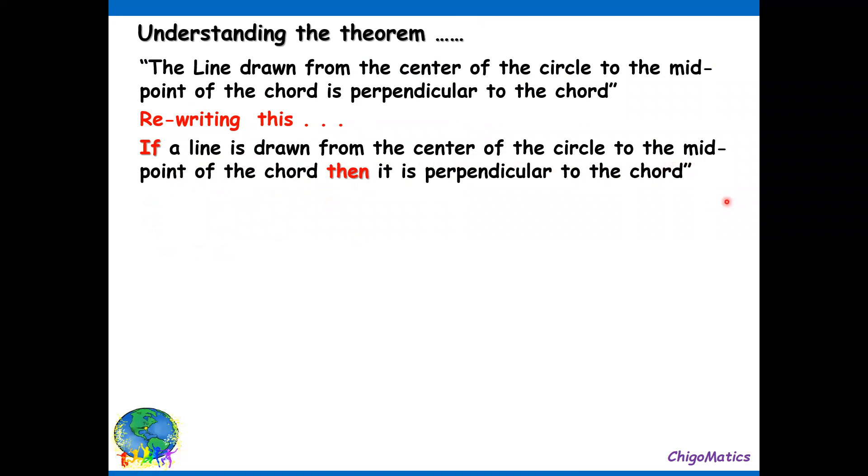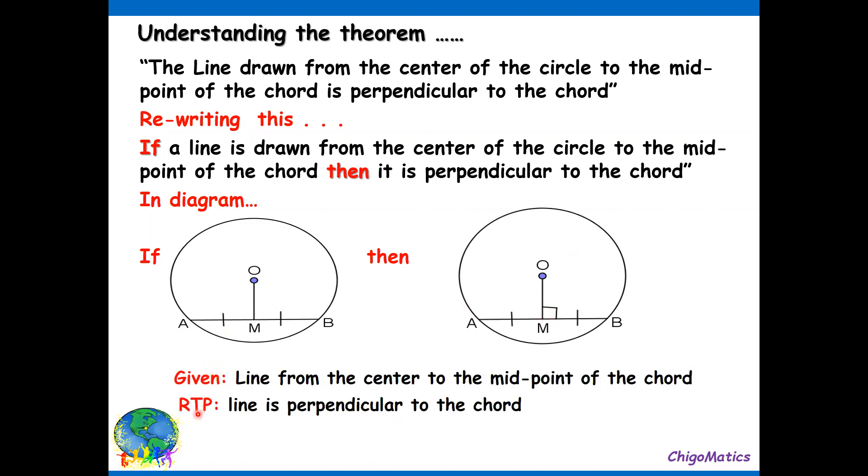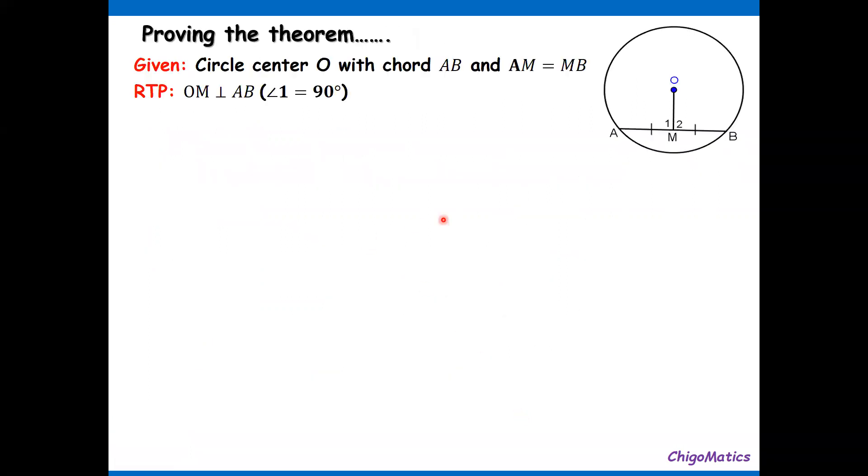In the diagram here is the line OM. M is the midpoint drawn to chord AB. Then we are saying OM is perpendicular to AB at 90 degrees. Given and required to prove constitute the hypothesis and the conclusion respectively. So we create this situation where we have labeled this angle one and two, so that what we want to prove is OM is perpendicular to AB.